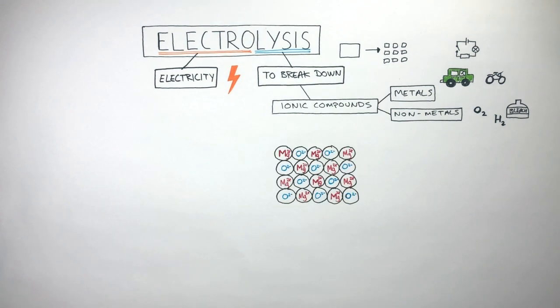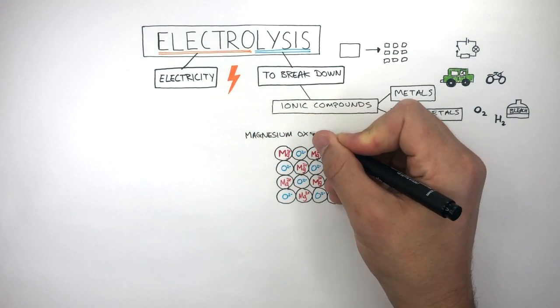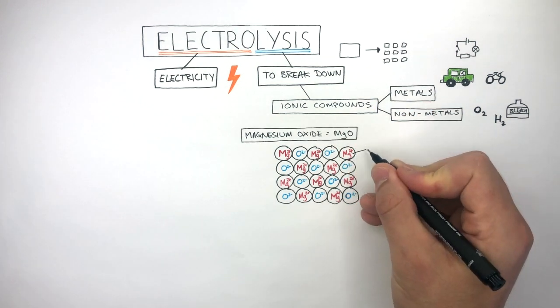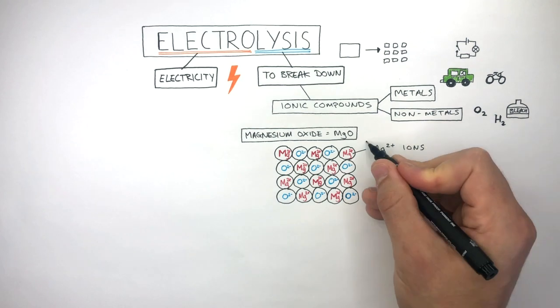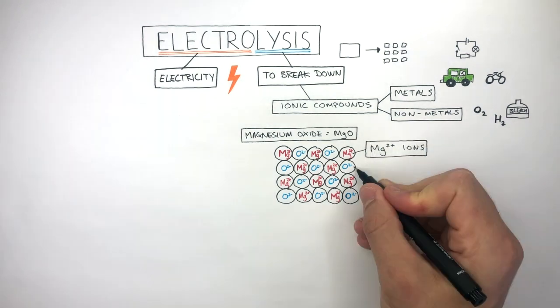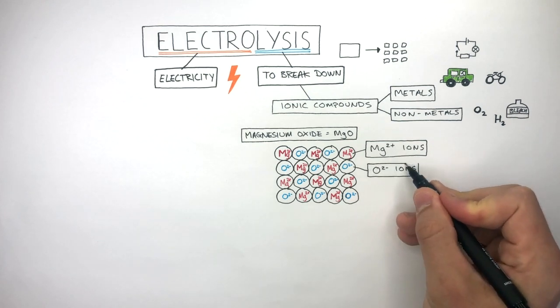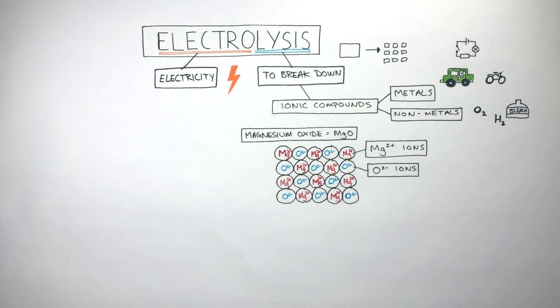Electrolysis can be used to break down this ionic compound, magnesium oxide, which has a chemical formula of MgO. It is made up of Mg2+ ions, which are called cations, and O2- ions, which are called anions. These ions are held together in a regular lattice structure by strong ionic bonds.